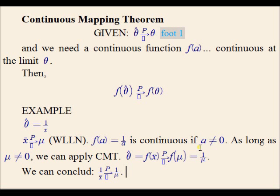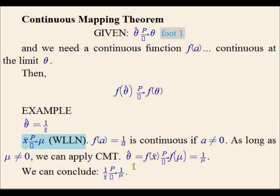That would have been a really difficult thing to conclude just using the definitions of convergence in probability — you could do it, but it would be tedious. The continuous mapping theorem gives us a nice shortcut, as long as we apply this logic: use some information about convergence in probability from the weak law of large numbers, and express our estimator as a continuous function of sample means.